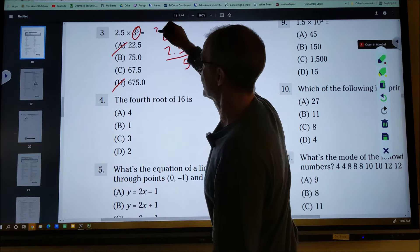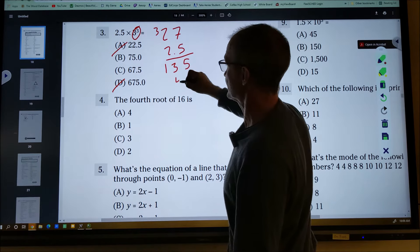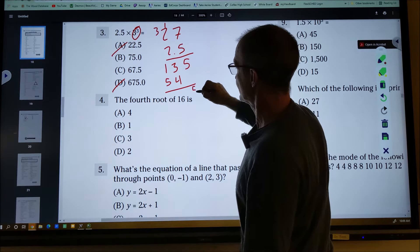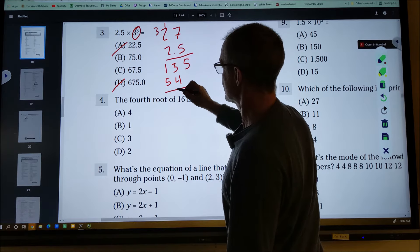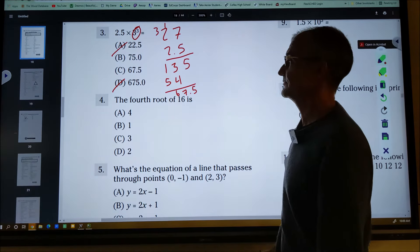Five times seven, 35. 10, 13. Two times seven, 14. Carry the one, four, five. And then I'm going to add those five, seven, six. I have my decimal place one unit over 67.5.